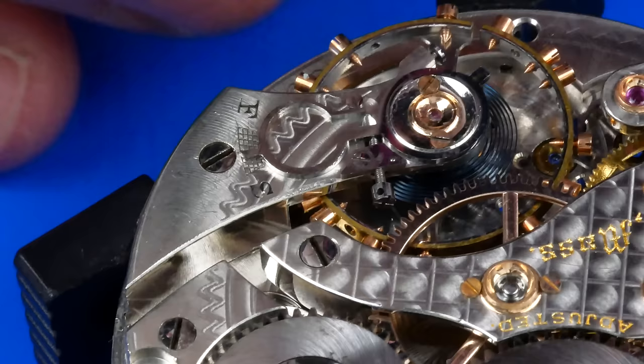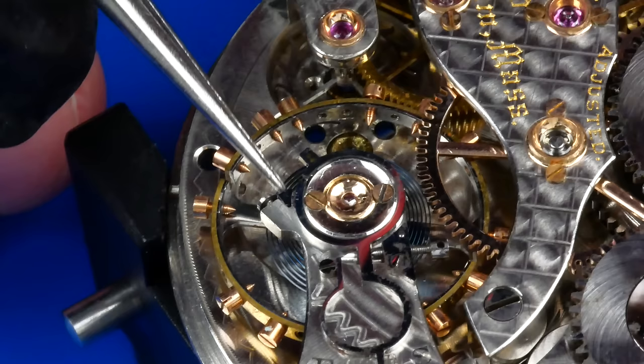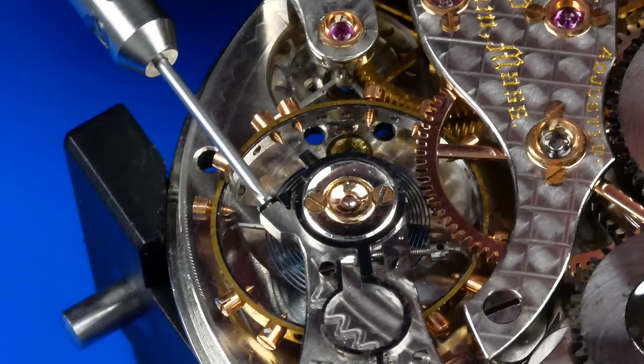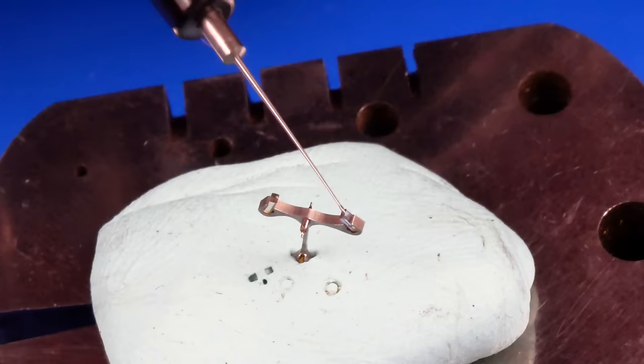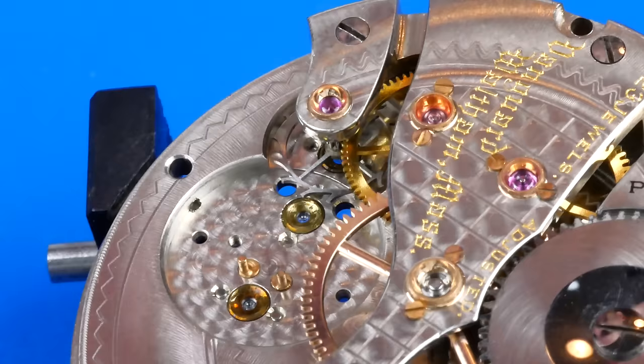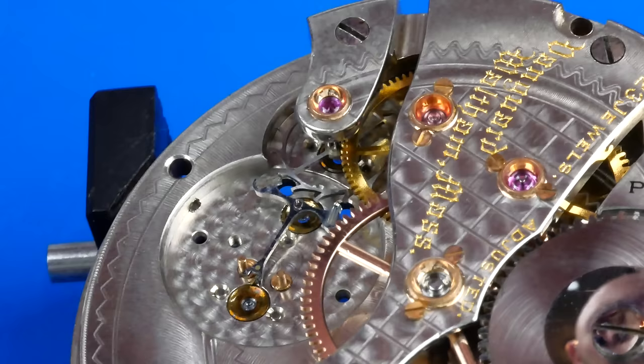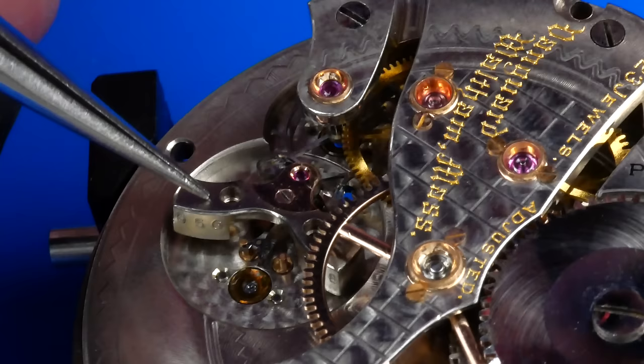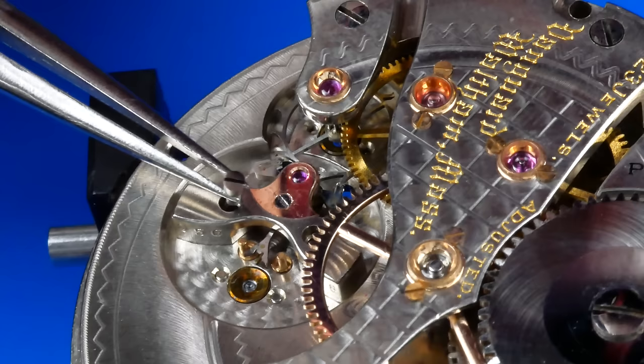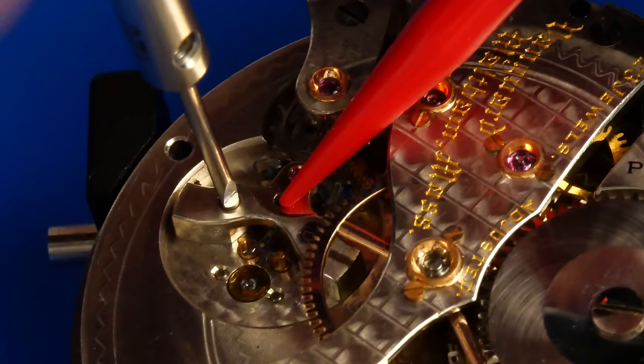The hairspring stud is moved into position before it is then secured by tightening the stud screw. I visually ensure the hairspring is properly routed between the regulator pins. Each of the pallet stones is greased with Mobius 941. And now the pallet fork can be installed onto the plate and secure it with its bridge. As with other pivots, I ensure they're seated before fully tightening the screws.